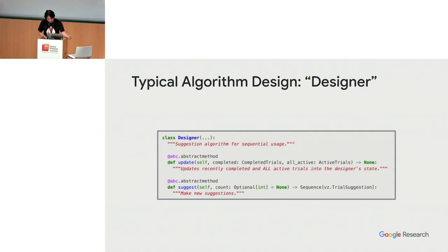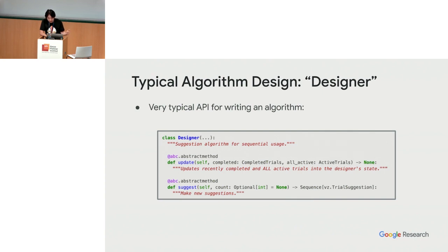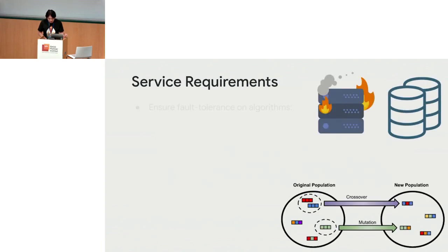Here's the typical algorithm design: almost every algorithm can be updated by the results of some optimization evaluation, and can also suggest new evaluations given the history. The problem is that this alone will not work for a service, because in a service you need to ensure fault tolerance on algorithms. This is a key difference between regular research and making it work on an actual production system.